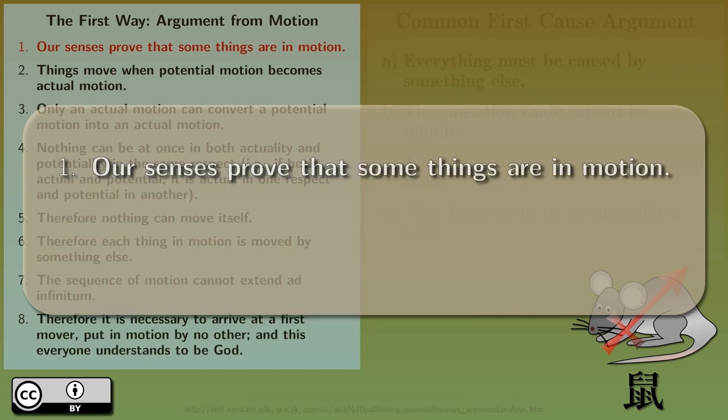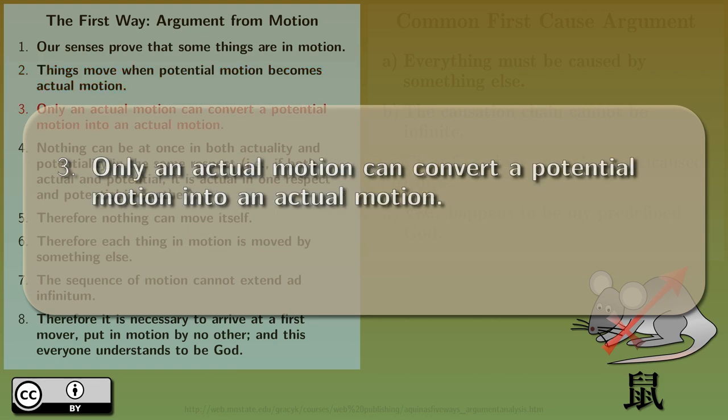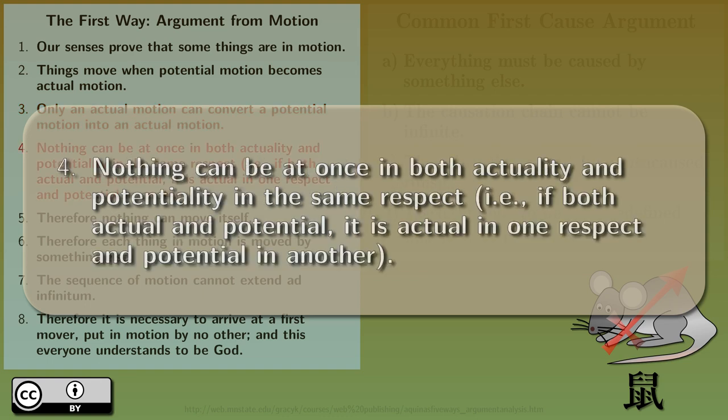Our senses prove that some things are in motion. Things move when potential motion becomes actual motion. Only an actual motion can convert a potential motion into an actual motion. Nothing can be at once in both actually and potentially in the same respect. For example, if both actual and potential, it is actual in one respect and potential in another.